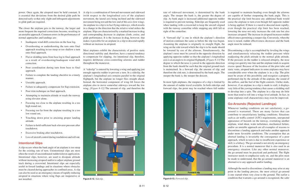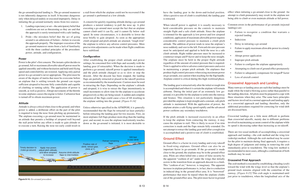Although the need to discontinue a landing may arise at any point in the landing process, the most critical go-around is one started when very close to the ground — the earlier a condition warranting a go-around is recognized, the safer. The go-around maneuver is not inherently dangerous in itself; it becomes dangerous only when delayed unduly or executed improperly. Delay in initiating the go-around normally stems from two sources: (1) landing expectancy or set — the anticipatory belief that conditions are not as threatening as they are; and (2) pride — the mistaken belief that going around is an admission of failure. The improper execution of the go-around stems from a lack of familiarity with the three cardinal principles: power, attitude, and configuration.